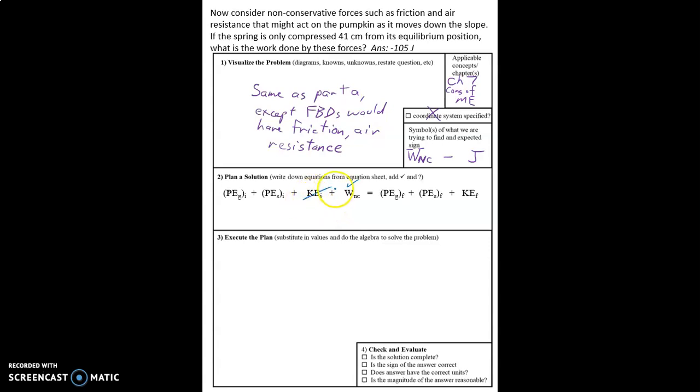All right so it still starts and ends at rest. It ends with no gravitational potential energy because it's at the bottom, starts with no spring potential energy. This is just like our equation last time except that we also have the work term. We do expect to get a negative value for the work because energy is being removed from the system by friction and air resistance.